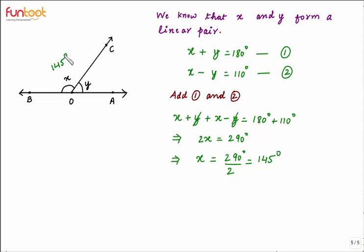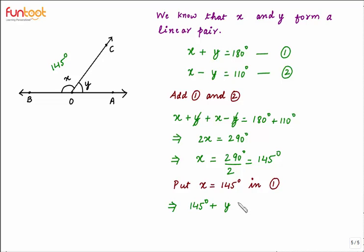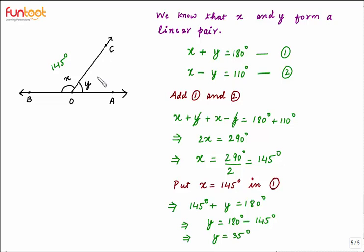Now we have to find the value of Y. Put X equal to 145 degrees in equation 1: 145 degrees plus Y is equal to 180 degrees. This implies Y is equal to 180 degrees minus 145 degrees, which gives Y equal to 35 degrees. So the value of X is 145 degrees and Y is 35 degrees.